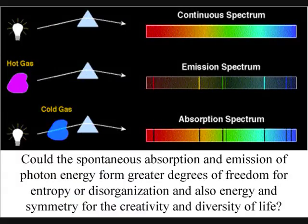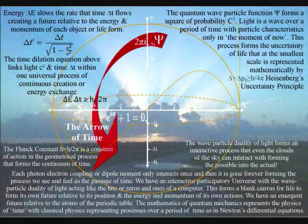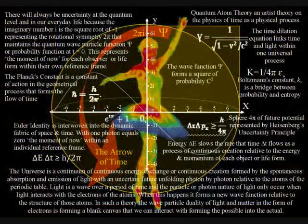This is like photon energy cascading down from the sun. This process forms greater degrees of freedom for entropy or disorganization, and it also forms the energy and symmetry for the creativity and diversity of life.